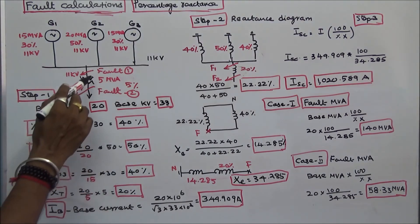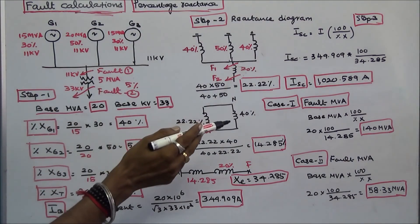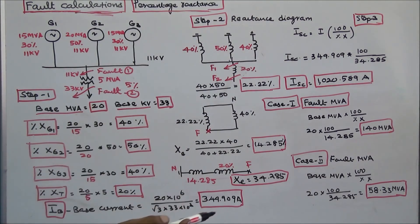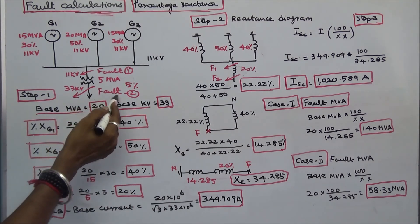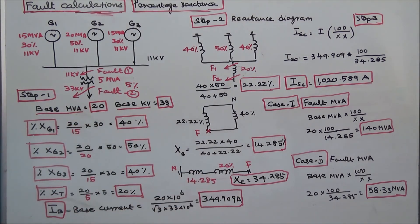The low voltage side fault MVA is 140 MVA, which is higher than the high voltage side fault MVA of 58.33 MVA. This is how we work through this problem. Thanks for listening.